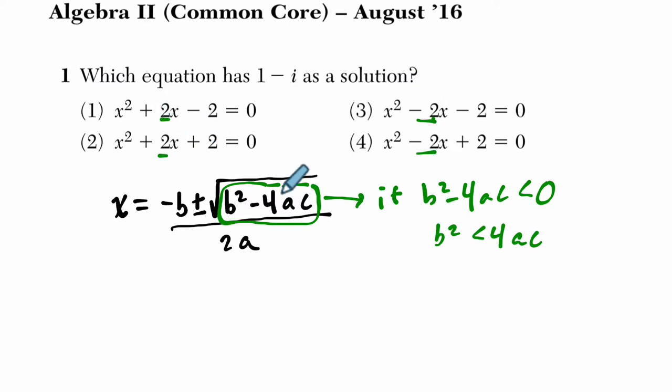So let's look at the first example. If we have b squared, so it's 2 squared, is that less than 4ac? Well, 4 times negative 2 times 1. Is this true? No. In the first, this is example 1, choice 1. 4 is actually greater than negative 8. In other words, if you took 4 and then subtracted negative 8, you get 4 plus 8 and that would be positive.